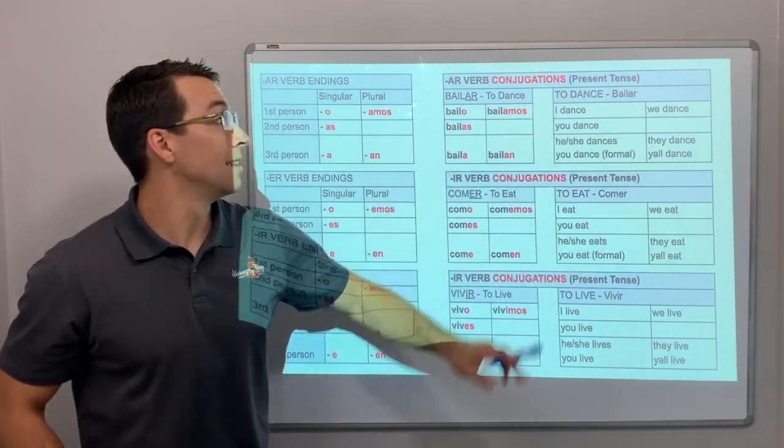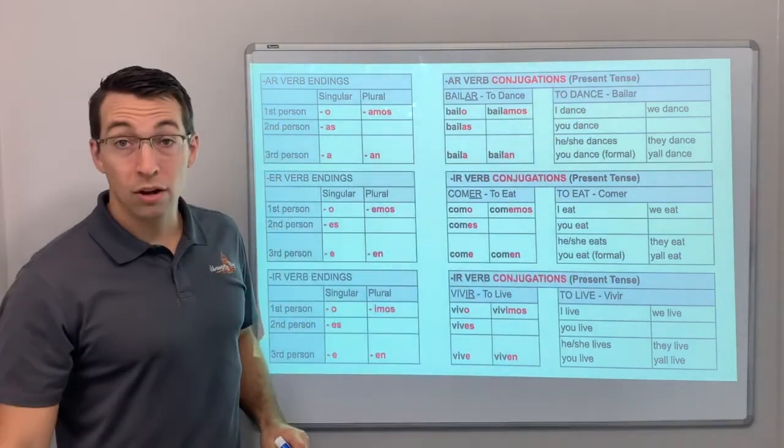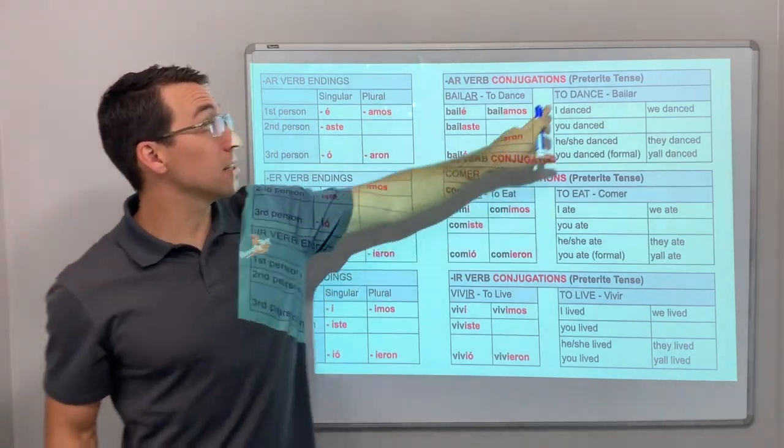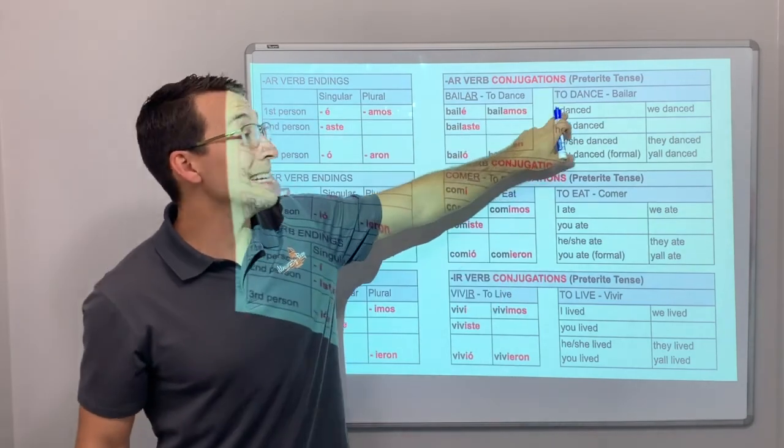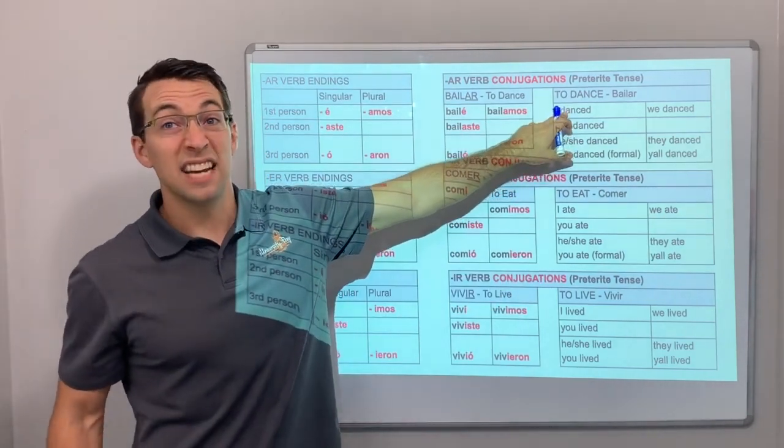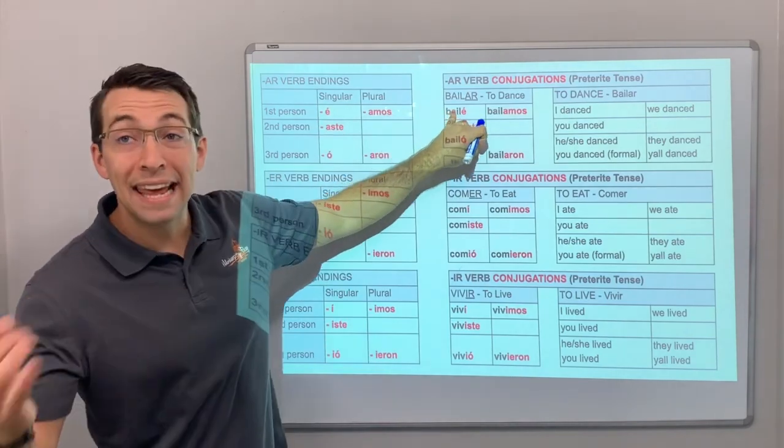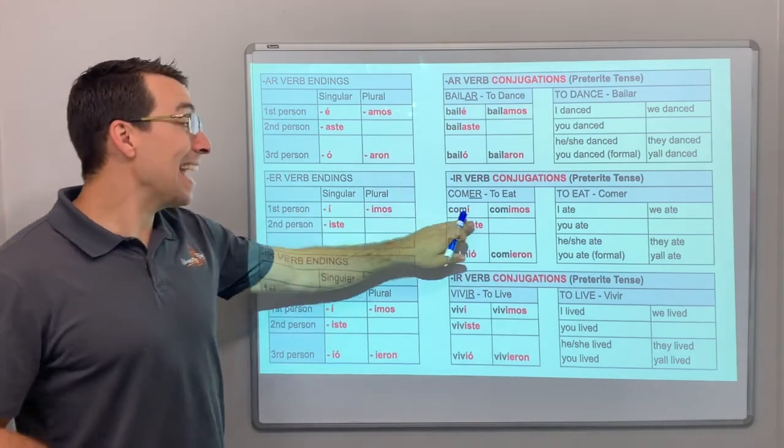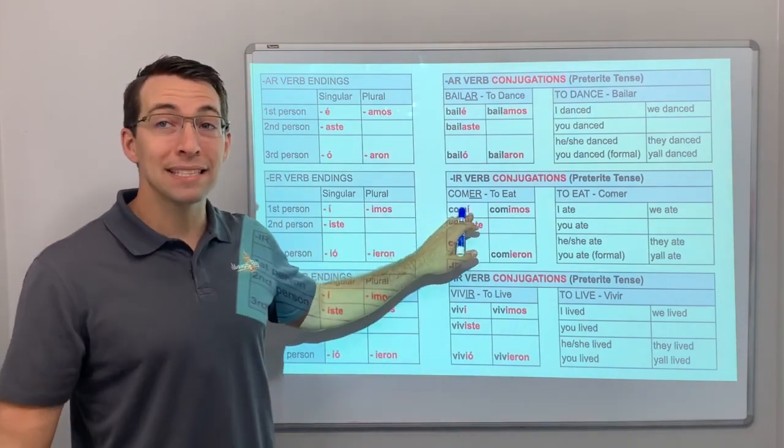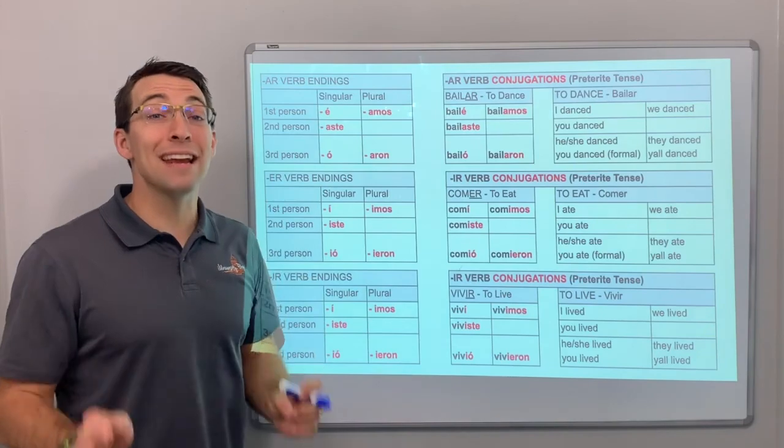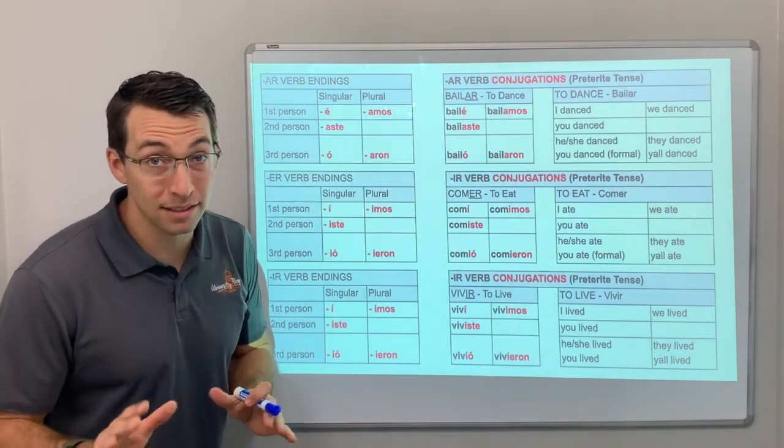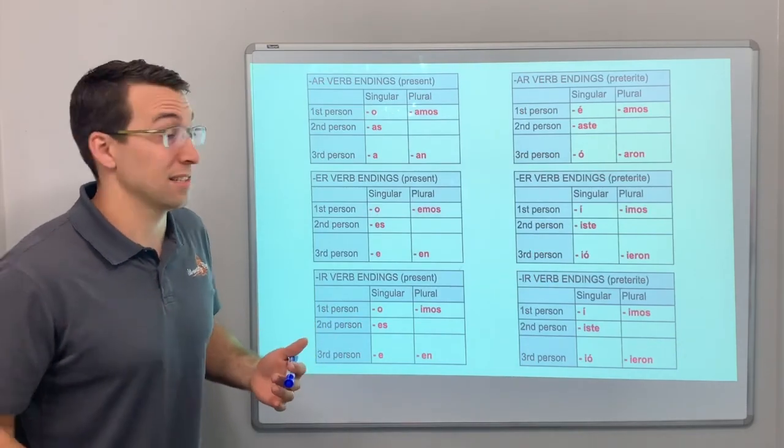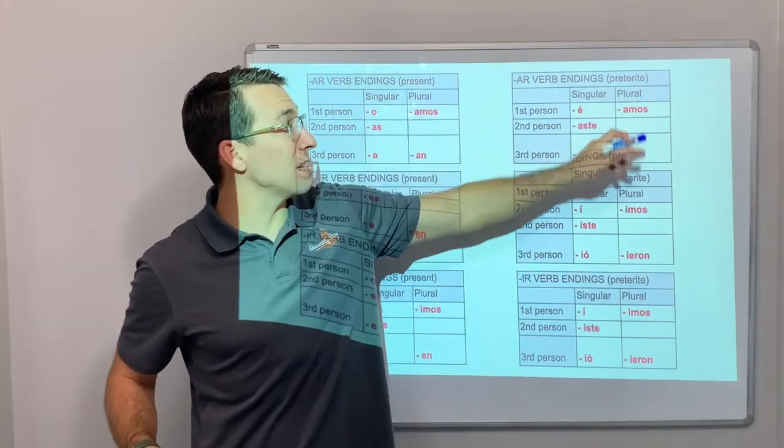So check this out. This is all present tense. I dance. Now check this out. What if we change it, ar verbs, er verbs, ir verbs, and we take it to the preterite? Last night I danced. Instead of I dance, yo bailo, yo bailé. I danced all night long. Last night I ate, yo comí pizza. There's different endings for every single tense. There's tons of conjugations in Spanish, and they're all systematized.